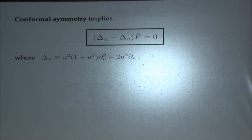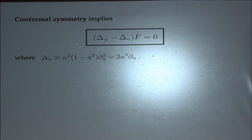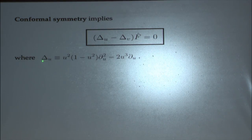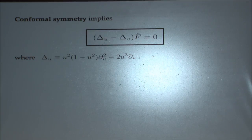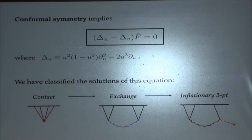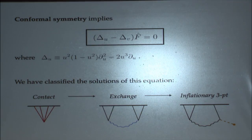This is our fundamental equation imposing special conformal symmetry — what you get when you massage three equations into this particular form. It involves a special second-order differential operator in the variable U and a similar second-order differential operator in the variable V. This particular differential operator is for a scalar exchange; it would slightly change if you exchange a spinning particle. What we'd like to do is classify the solutions to this equation: first, the solutions for pure contact diagrams, then the solutions for exchanges, and then perturb those solutions to get inflationary three-point correlators.